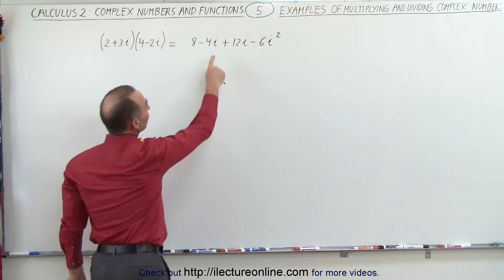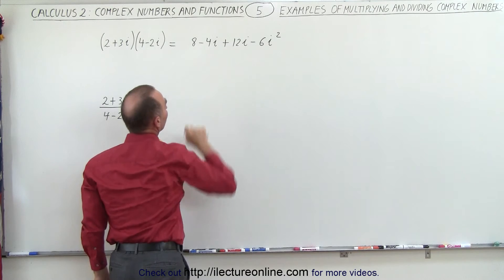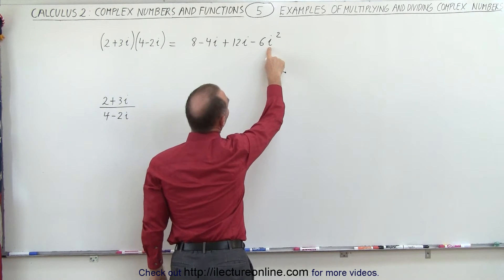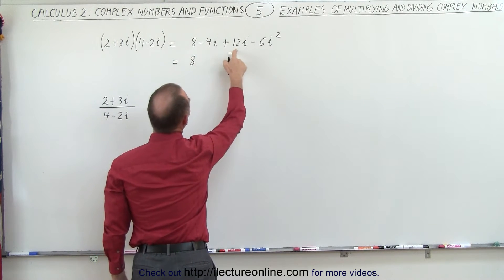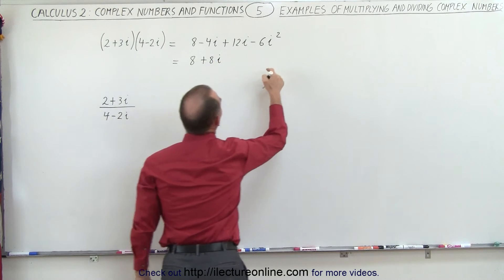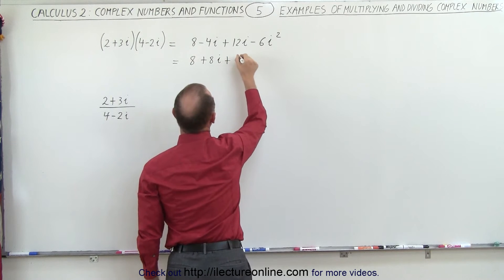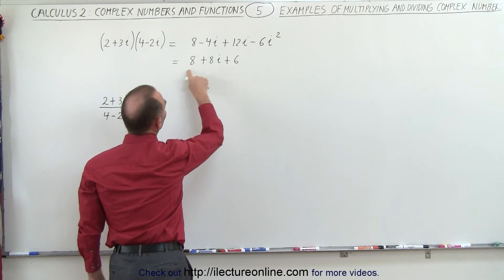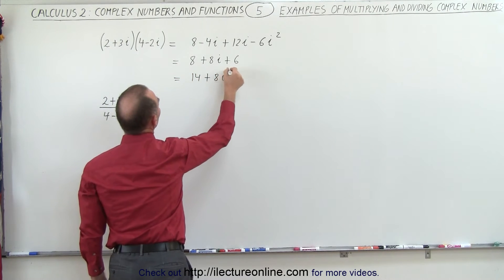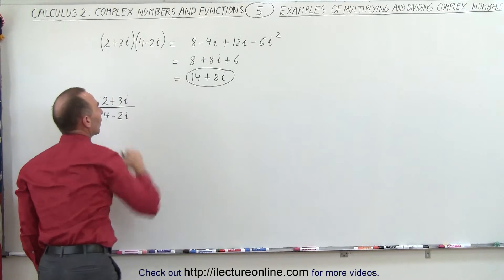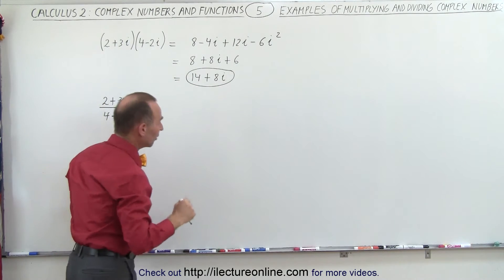The next step is to combine the two terms that have an i in them — these are the imaginary parts of the solution. We can also convert i squared to negative 1. So this becomes 8, and negative 4 plus 12 is plus 8i. Since i squared is negative 1, negative 1 times negative 6 gives us positive 6. Combining the two real parts, this equals 14 plus 8i, which is the product of these two complex numbers. Notice you get a complex number again — a real part and an imaginary part.